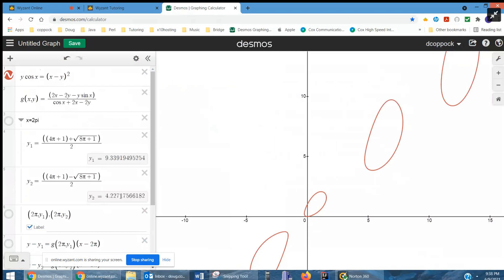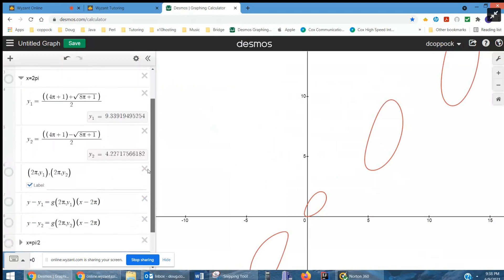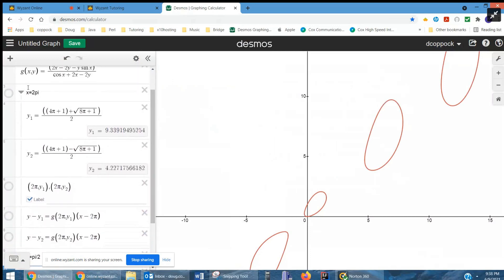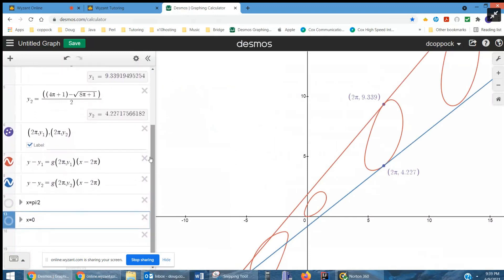There are the two values you get, decimal approximations anyway. And if I actually enable the graph, it looks like we do have two tangent lines when x is equal to 2π. And there's actually the equations of those tangent lines using point slope. And this g of 2π comma y sub 1 is actually giving us the slopes of this red and blue tangent line.